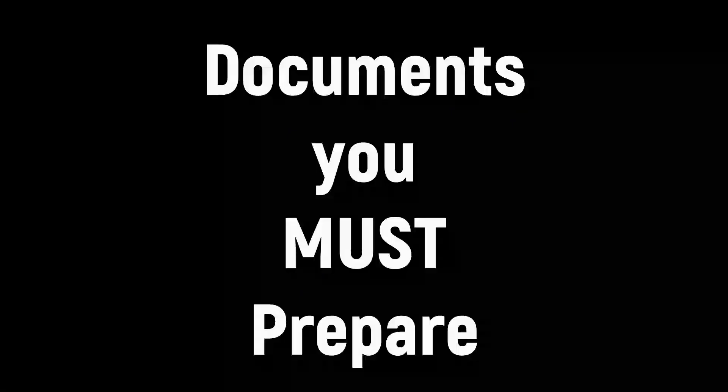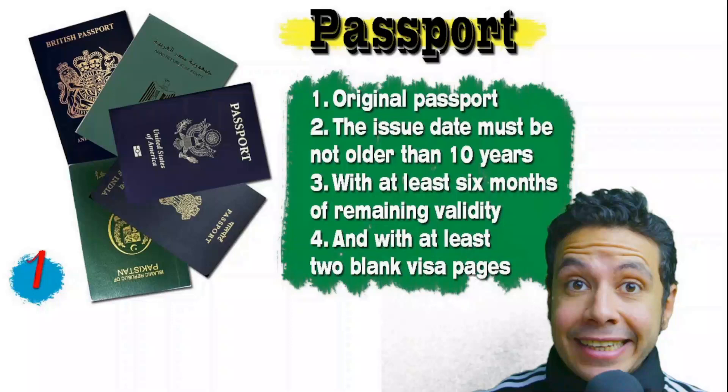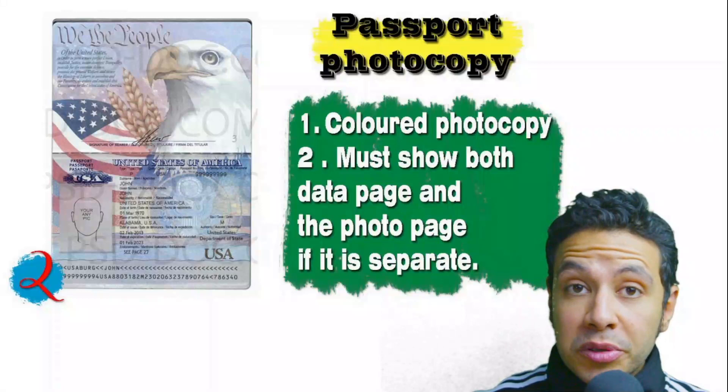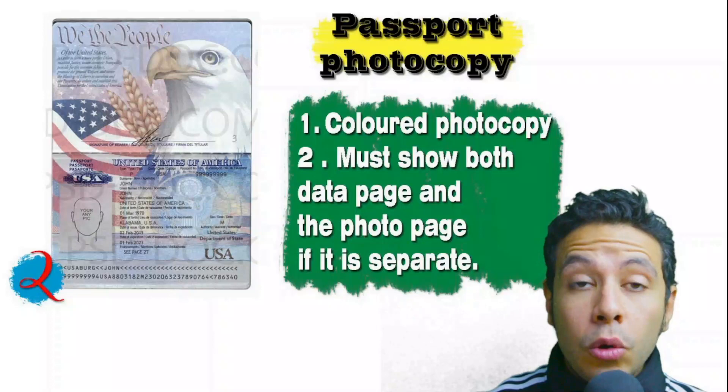Speaking about your passport: it must be original and must not be older than 10 years, with at least six months of remaining validity and at least two blank visa pages for stamps. In many cases you will also need a passport photocopy — it might be one copy or more, preferred in color, with both the data page and photo page showing. In some cases you might be required to photocopy every single page, but generally only the data page and photo page are needed.